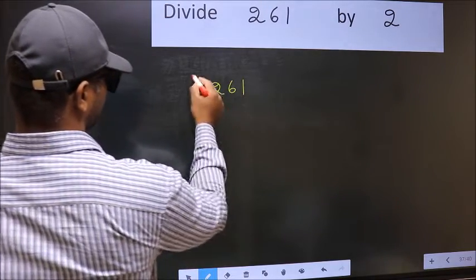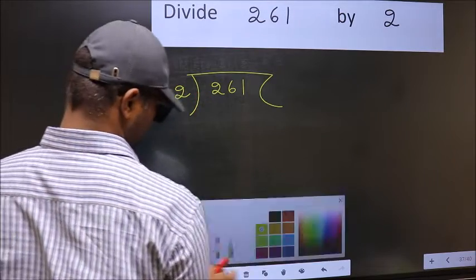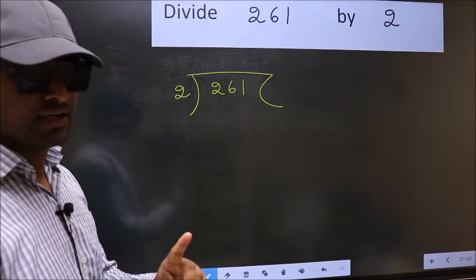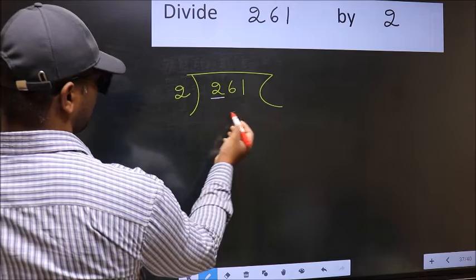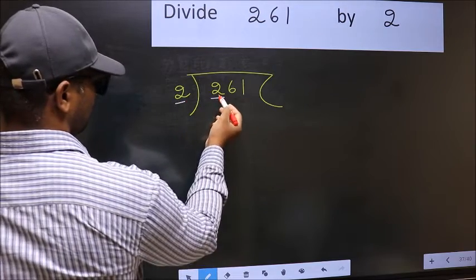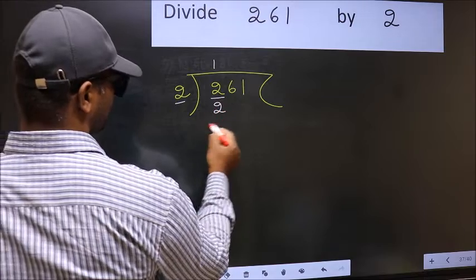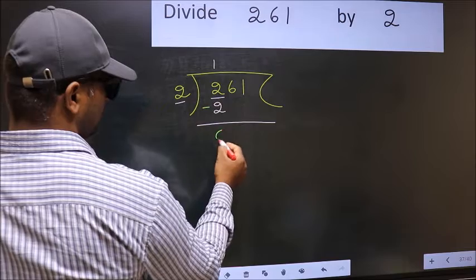261, 2 here. This is your step 1. Next, here we have 2, here also 2. When do we get 2 in 2 table? 2 1s, 2. Now you should subtract. 2 minus 2, 0.